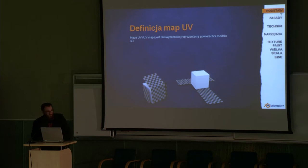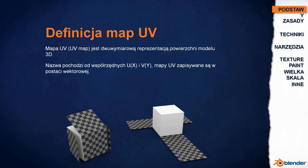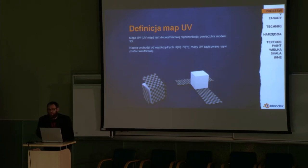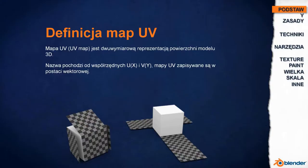UV unwrapping — a UV map is a representation of the surface of a 3D object, unwrapped and represented in 2D space. The name UV comes from the coordinates. Since X, Y, and Z in 3D modeling are used by the 3D models, to avoid confusion, new coordinates were introduced: U and V, which correlate with X and Y in 2D space.